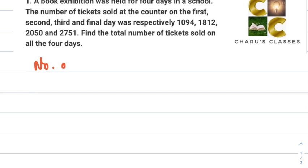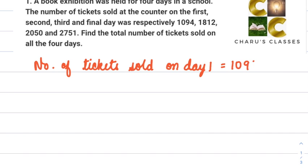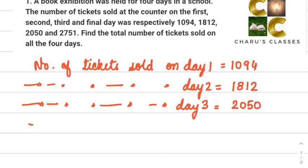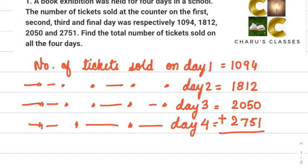Number of tickets sold on day 1 is equal to 1094. Number of tickets sold on day 2 is 1812. Number of tickets sold on day 3 is 2050. And number of tickets sold on day 4 is 2751. They are asking the total number of tickets sold on the 4 days, so we have to add them all.